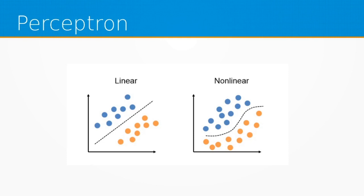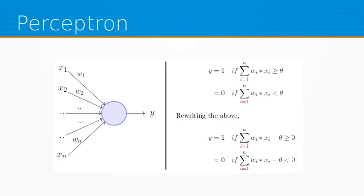The perceptron is only able to learn linear decision boundaries. Let's look at how it generates an output. You have inputs x1 to xn and weights w1 to wn. It computes a dot product of all of these, and if the dot product is above theta — which is the bias — it outputs 1; otherwise it outputs 0.